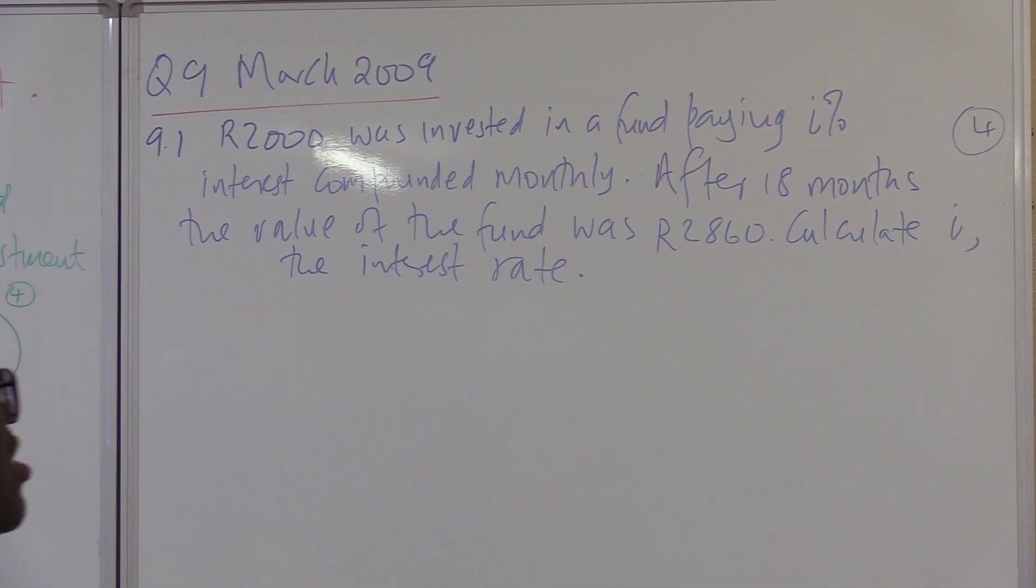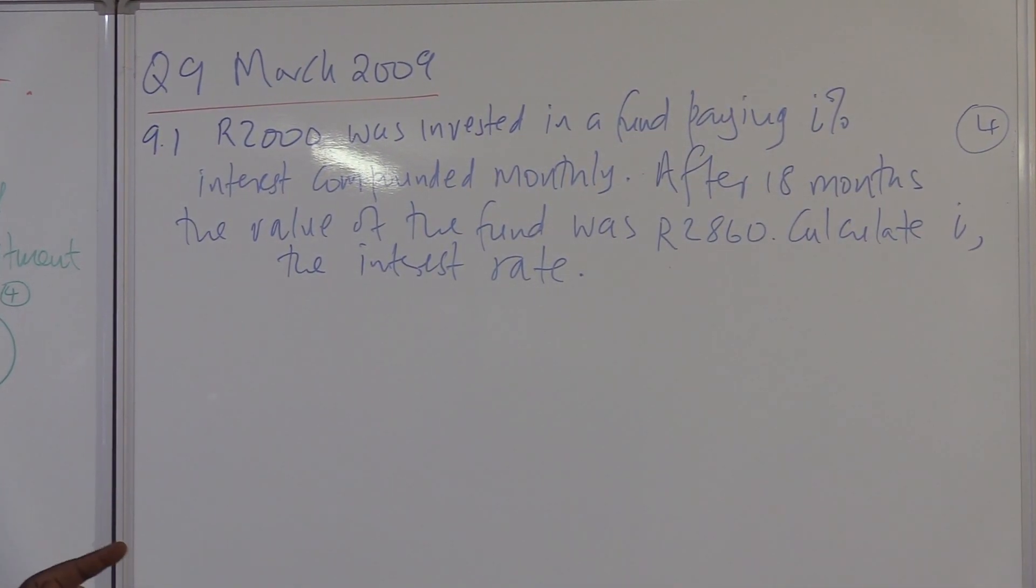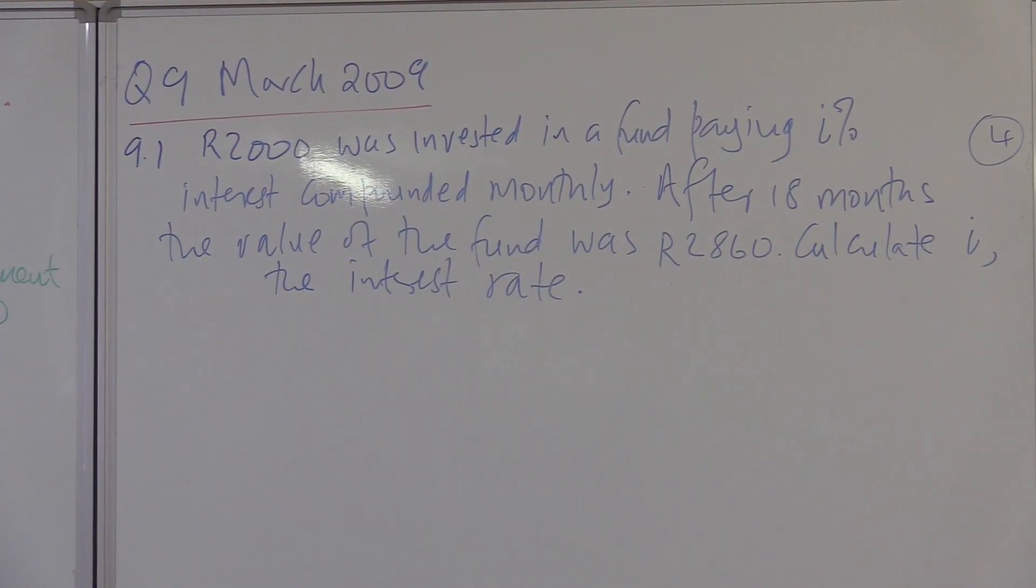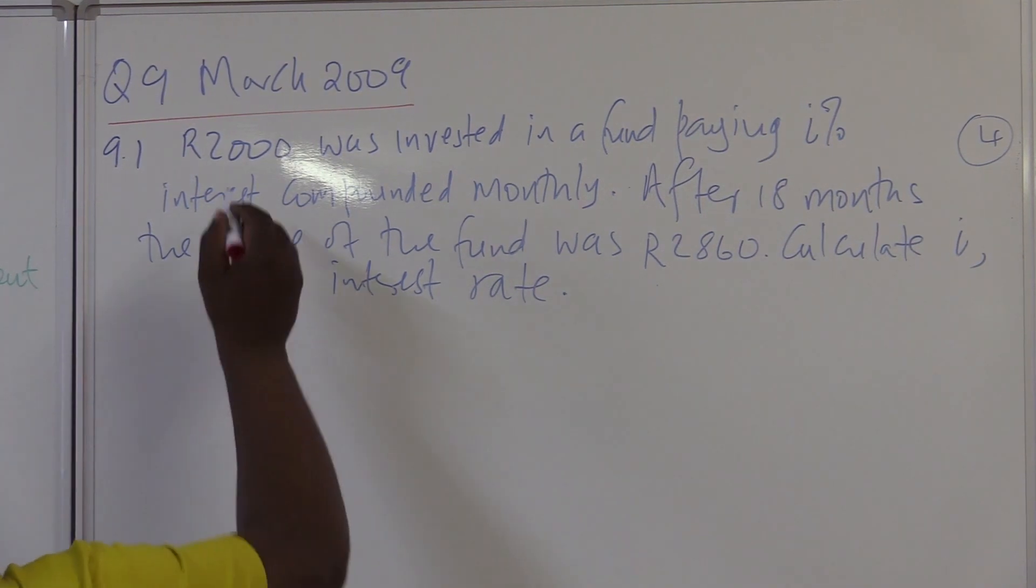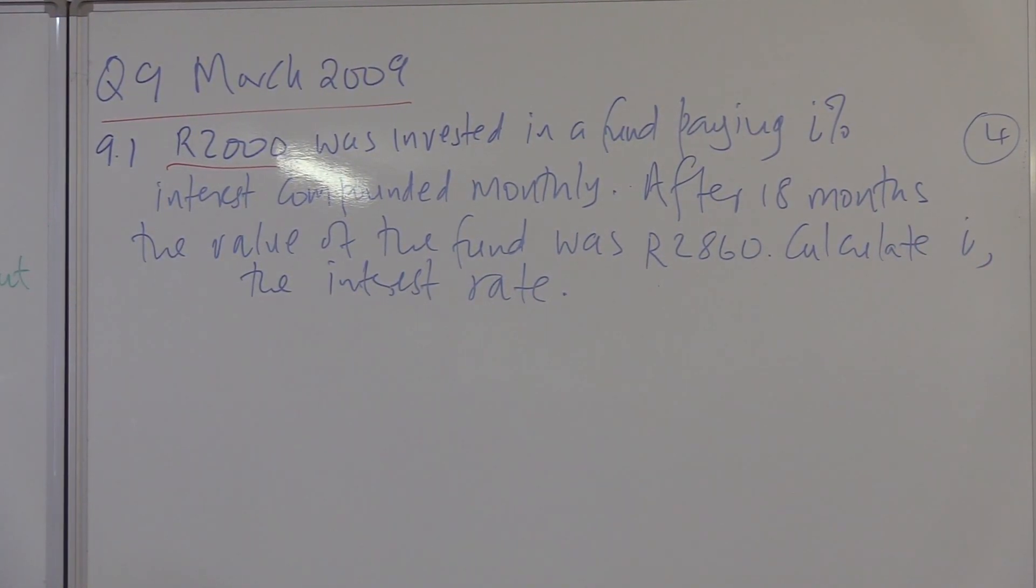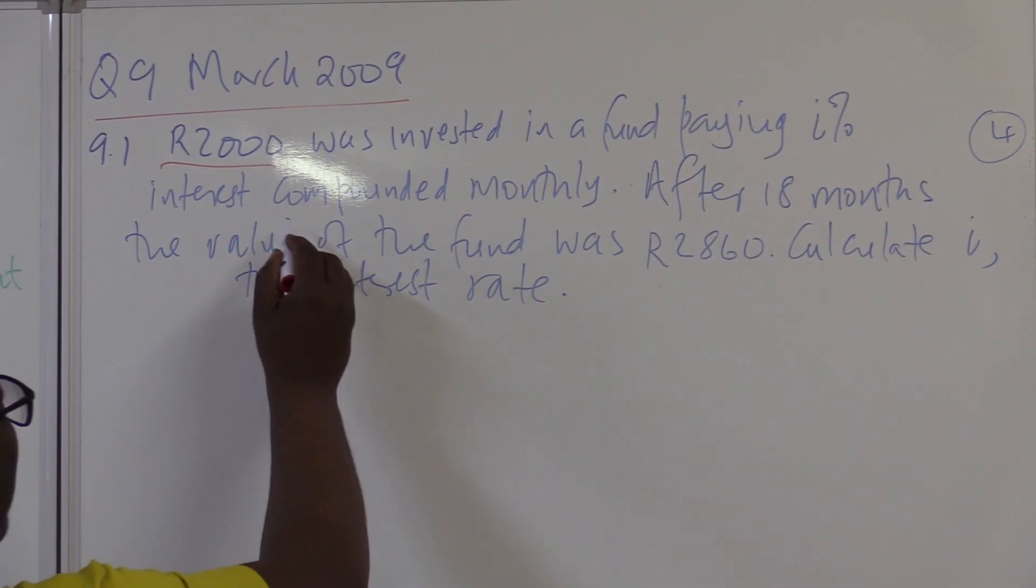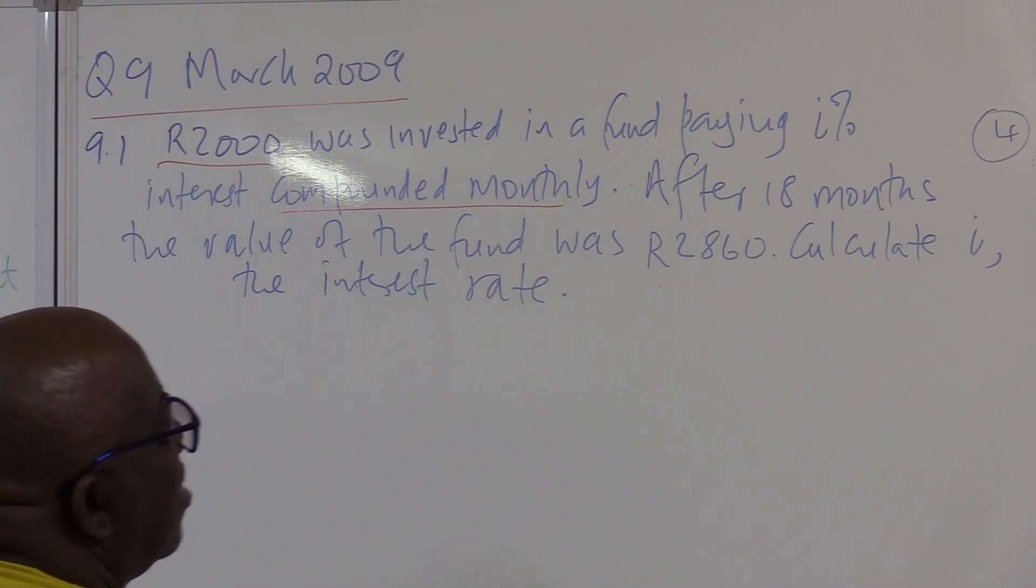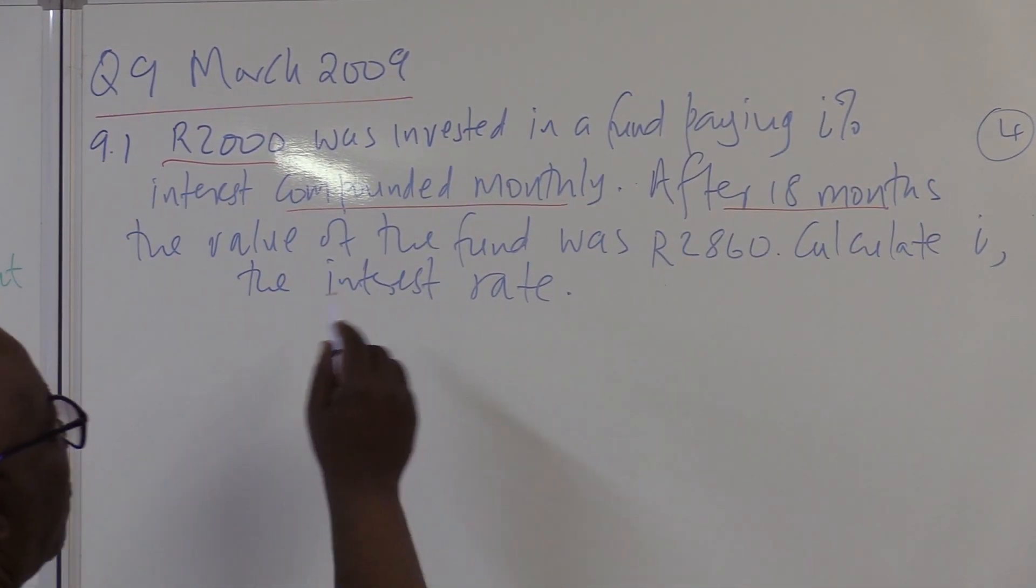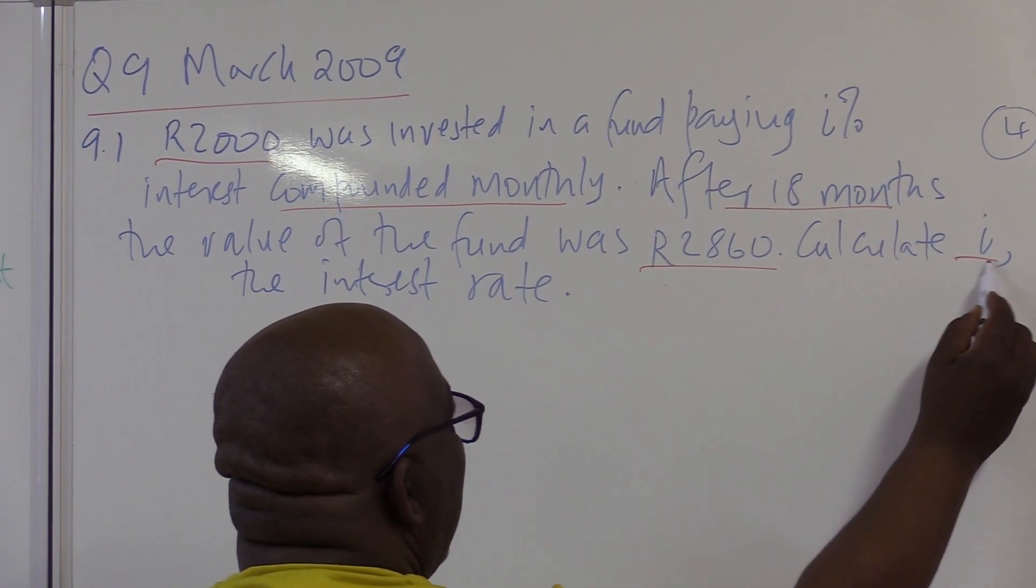R2000 was invested in a fund paying I percent interest compounded monthly. After 18 months the value of the fund was R2860. Calculate I, the interest rate.